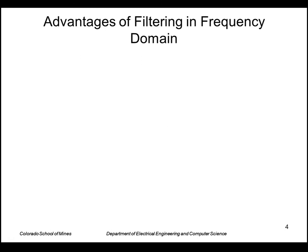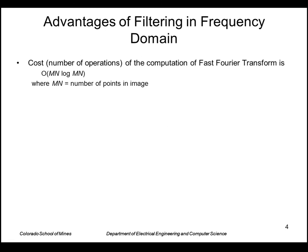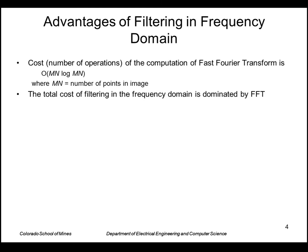So why would we want to do this? Basically, for large filters it is cheaper to do convolutions using the frequency domain method. The fast Fourier transform has a cost of order MN times log(MN), where MN is the number of points, and filtering is dominated by that cost.